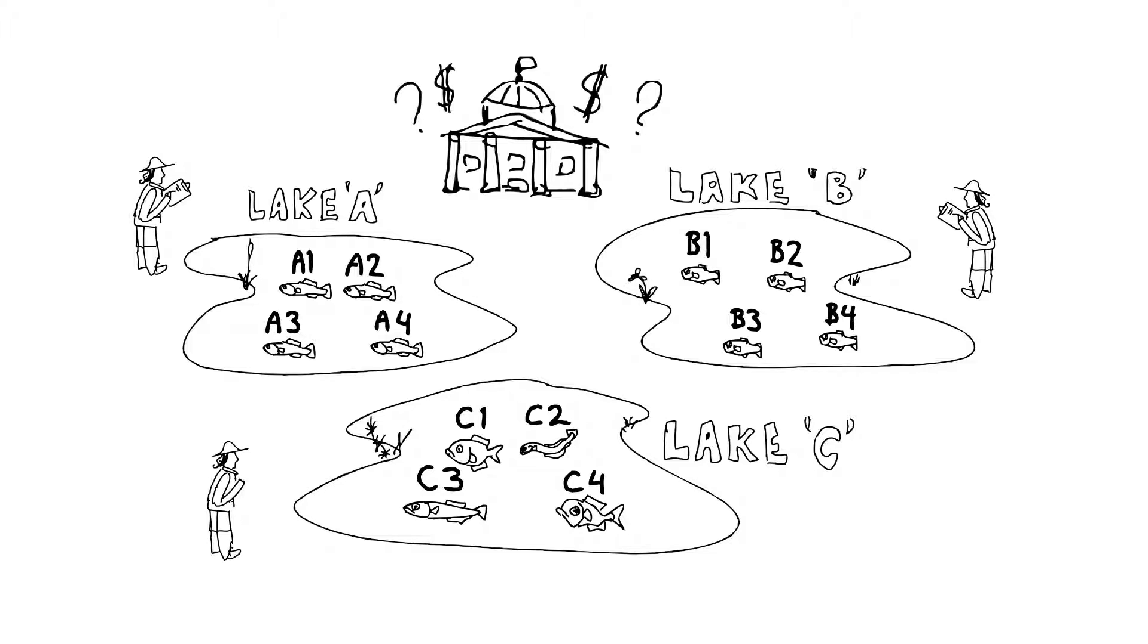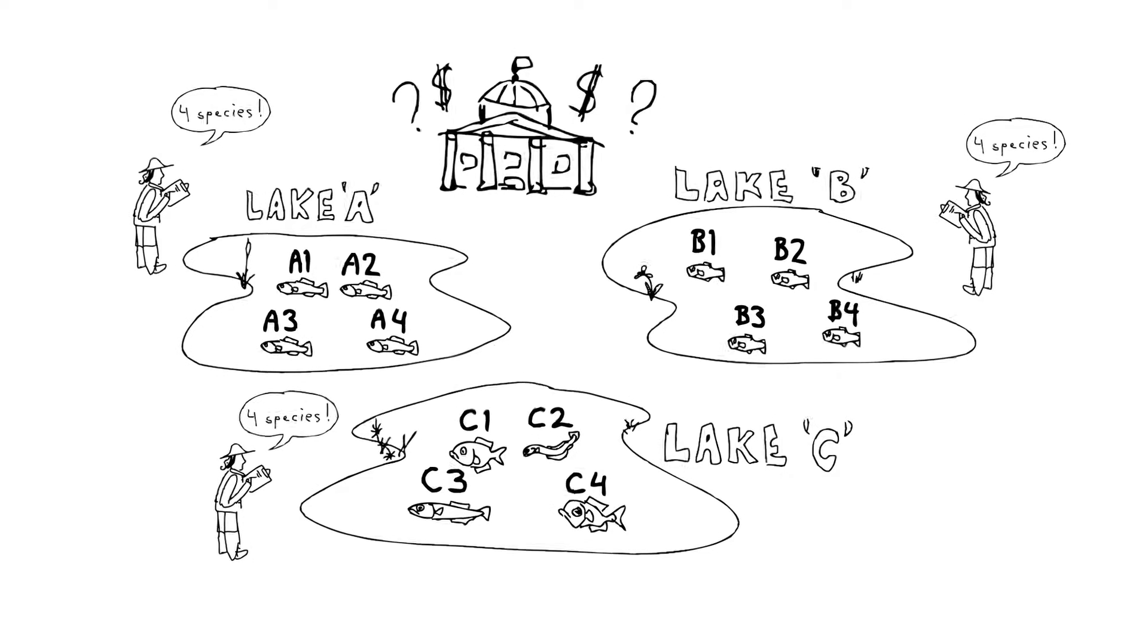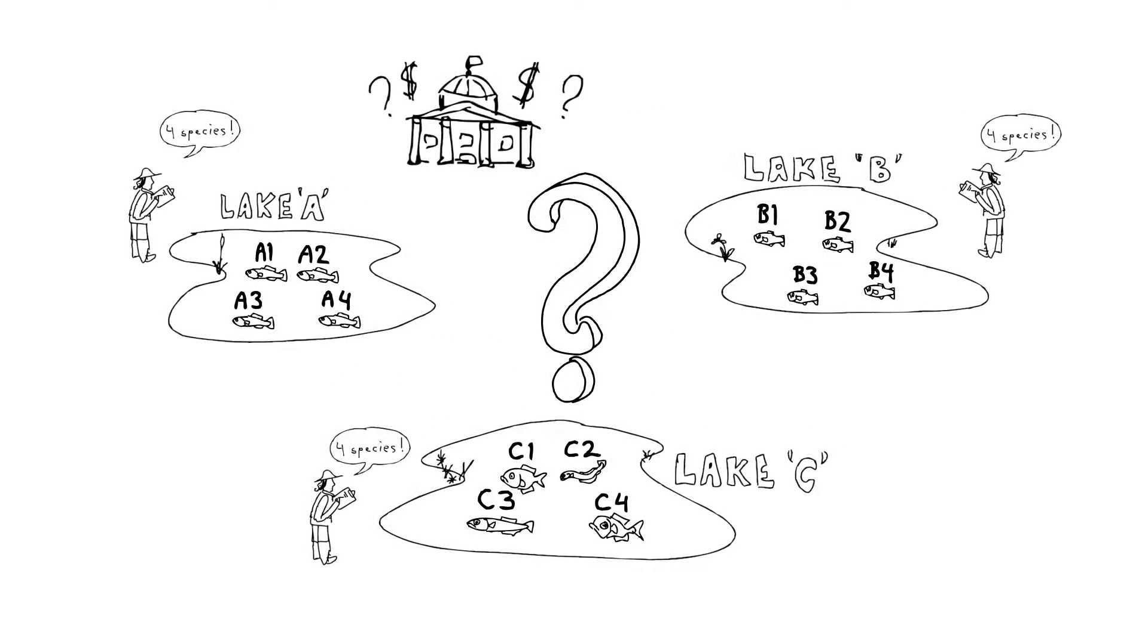That's the problem. If they only consider species richness, there's equal diversity—four different fish species in each of these lakes. How do you decide which lake should receive your limited resources to preserve it?